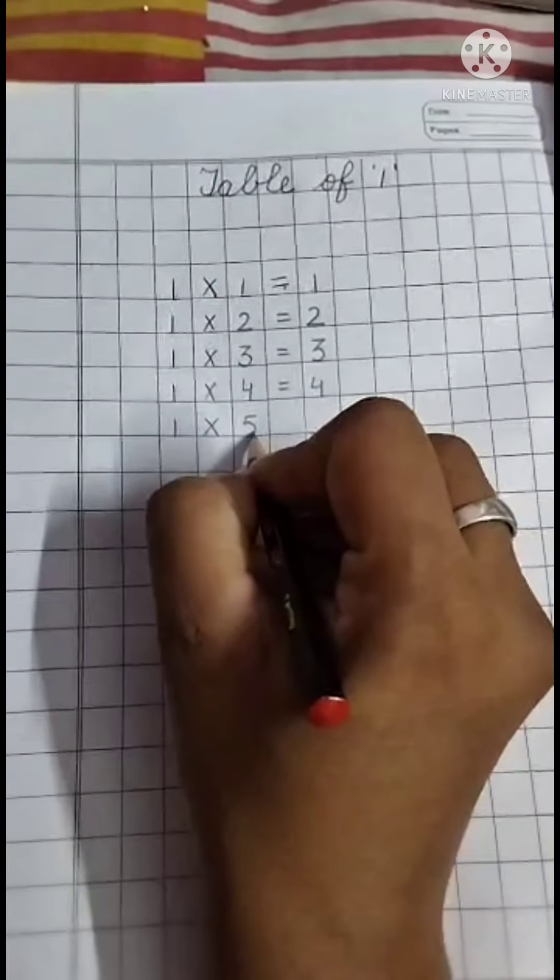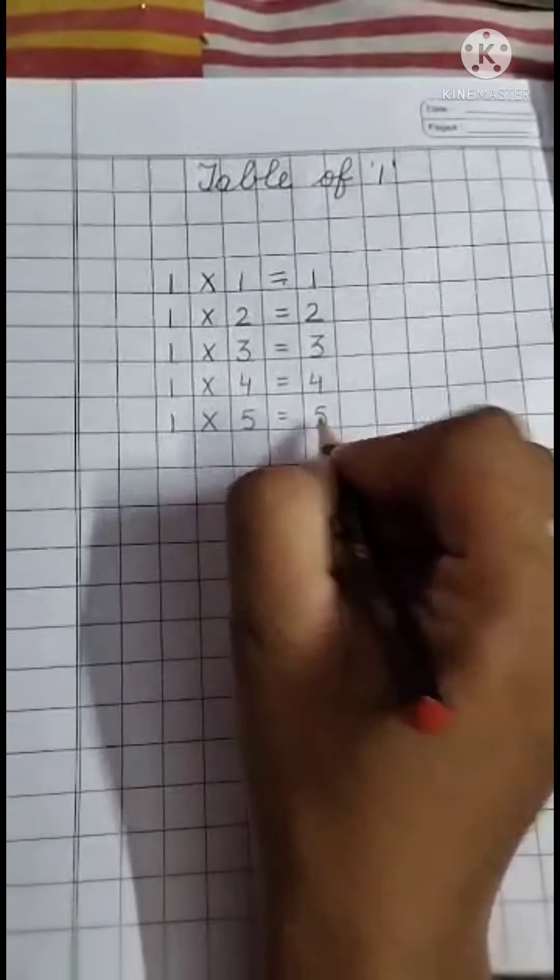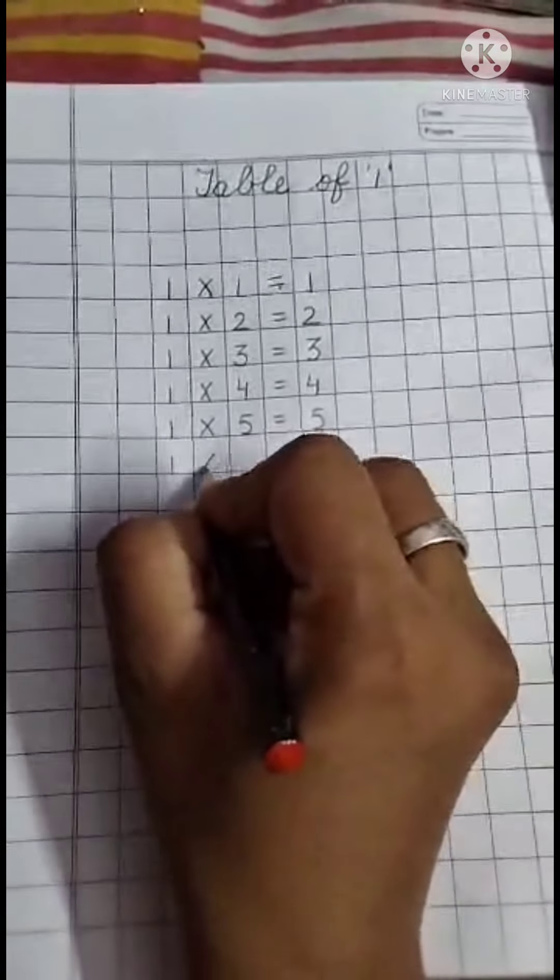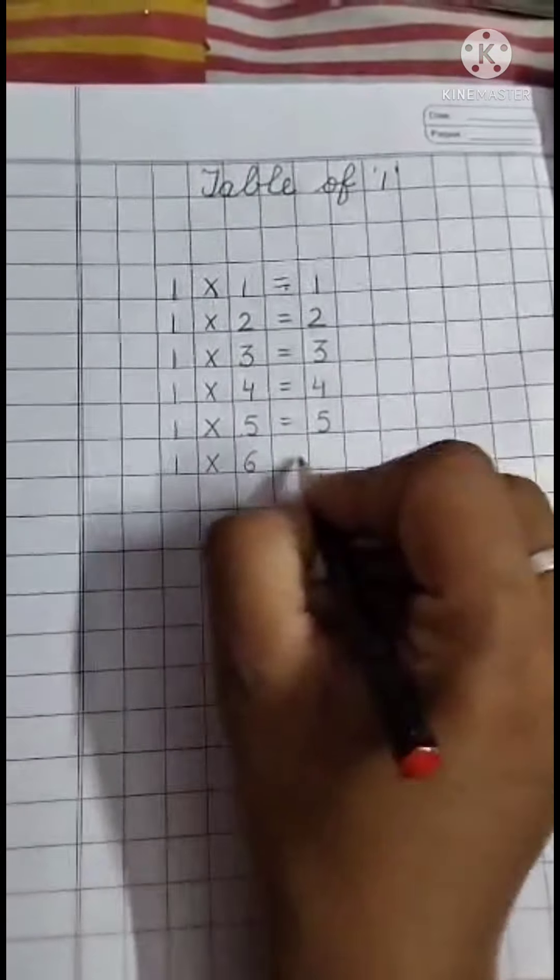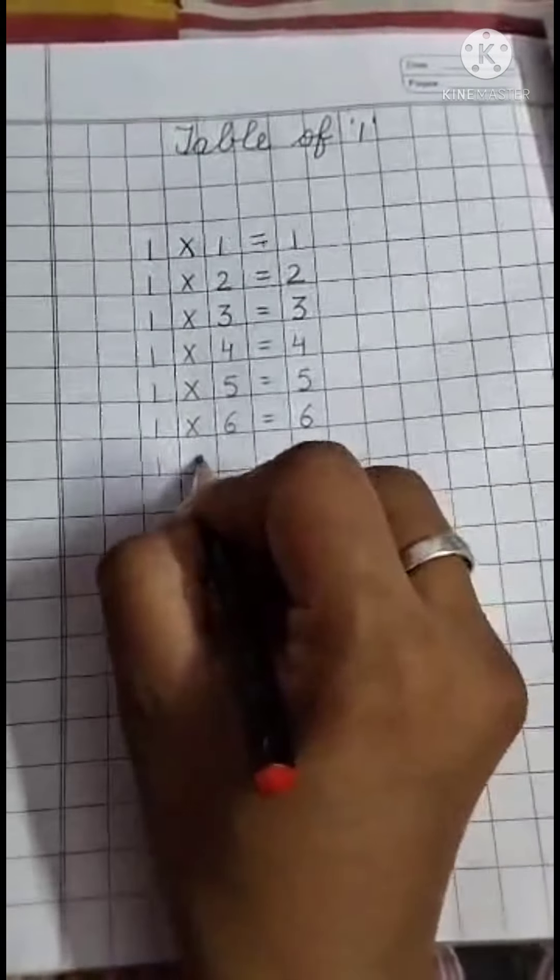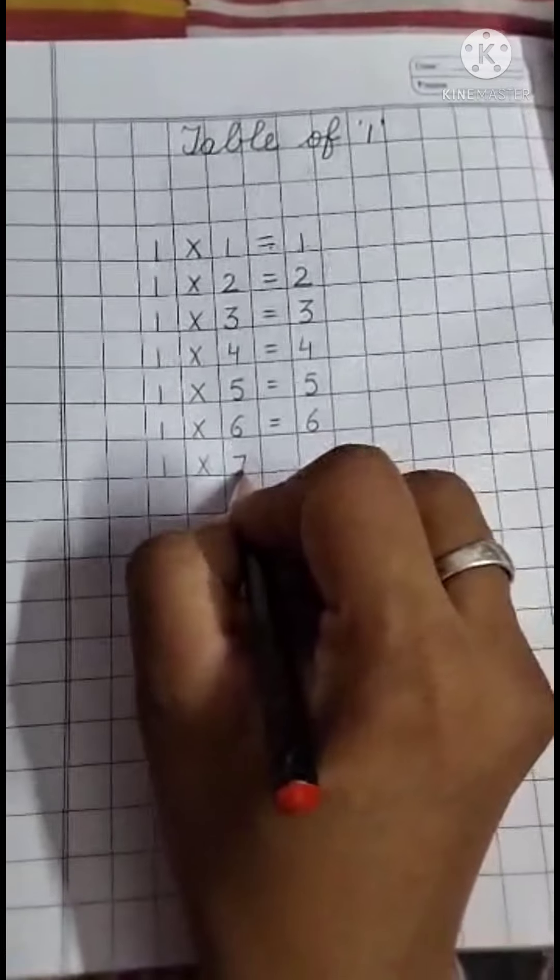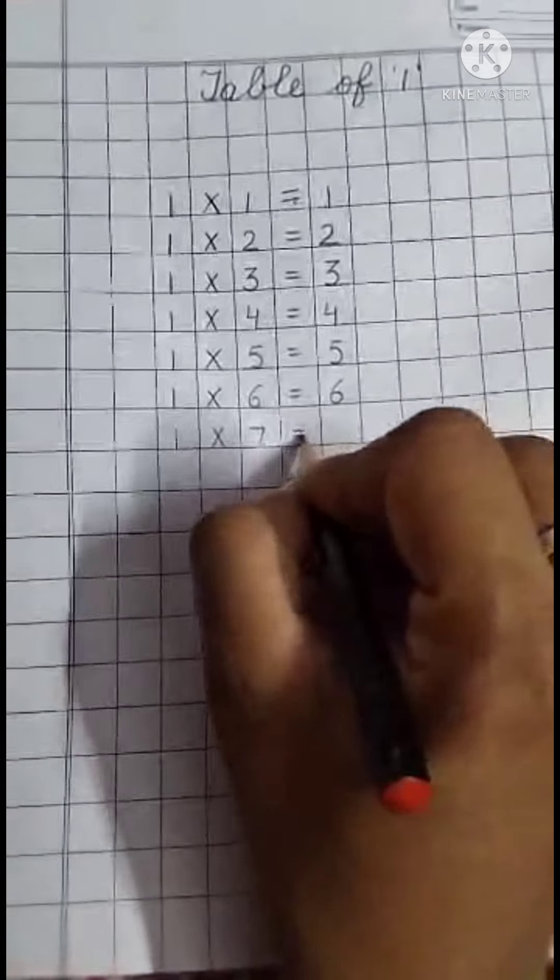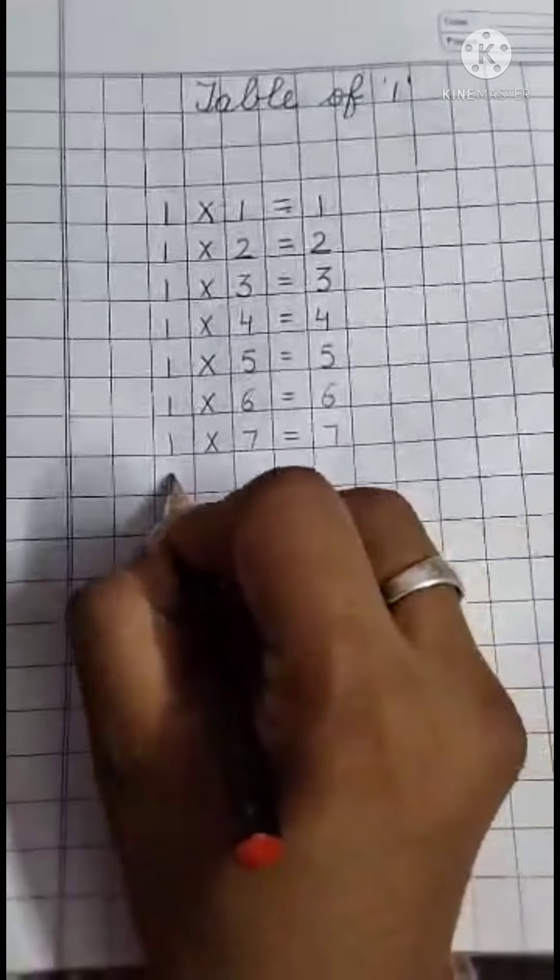One. Five is a five. One. Six is a six. One. Seven is a seven.